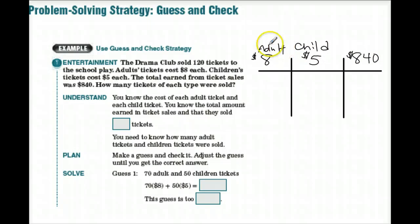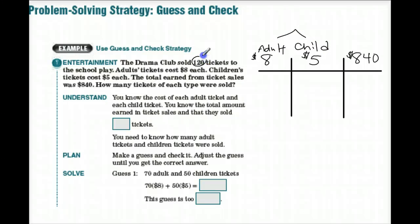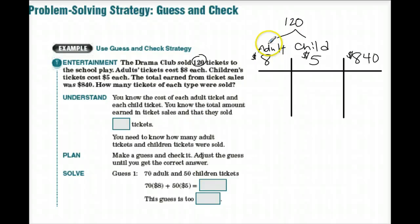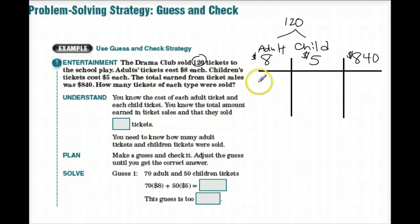Between adult tickets and children's tickets, we know we have to have 120. So whatever our guess is, 120 tickets must be sold total, and it should be a combination of adult and child tickets. Let's try some things.